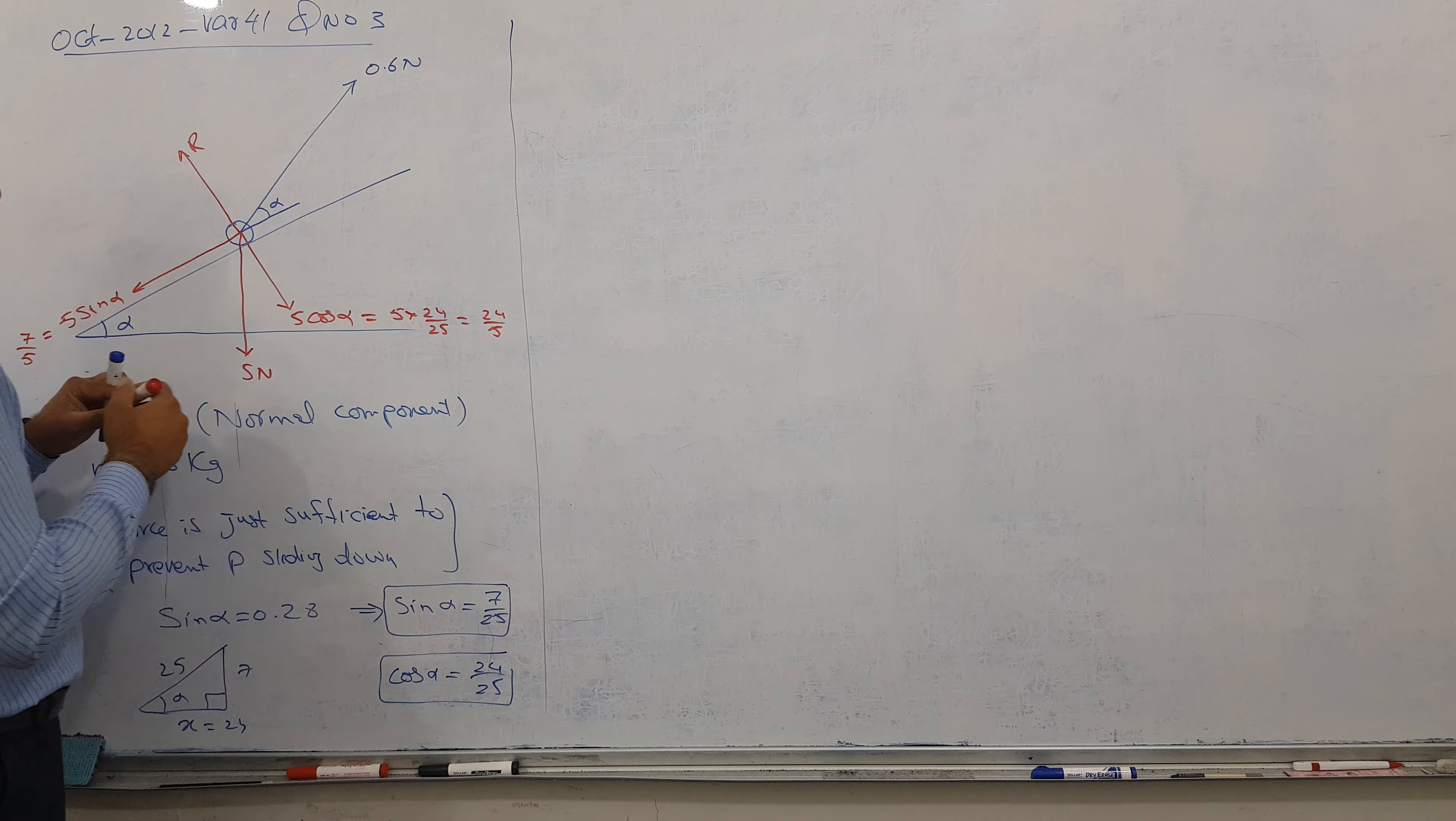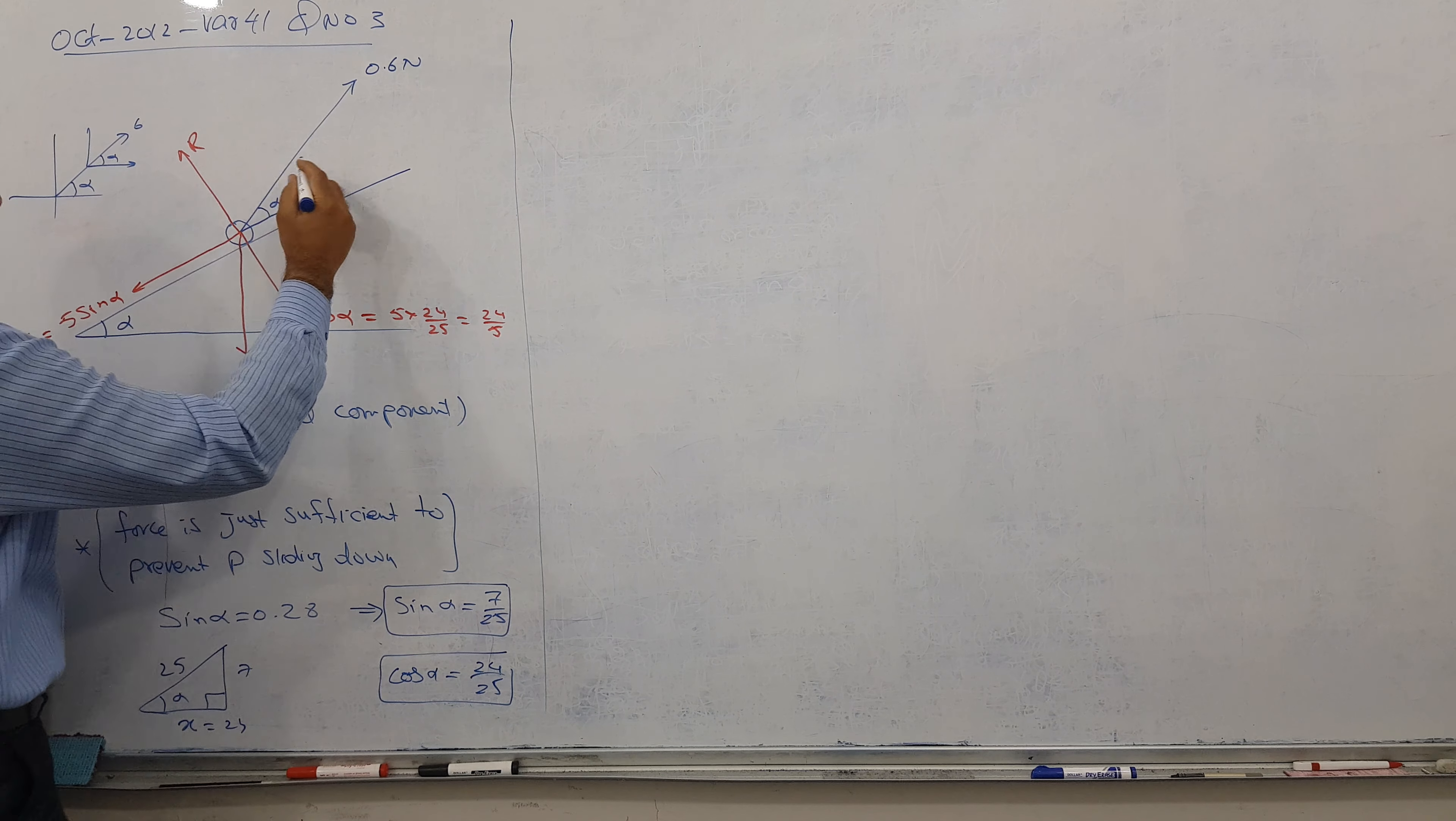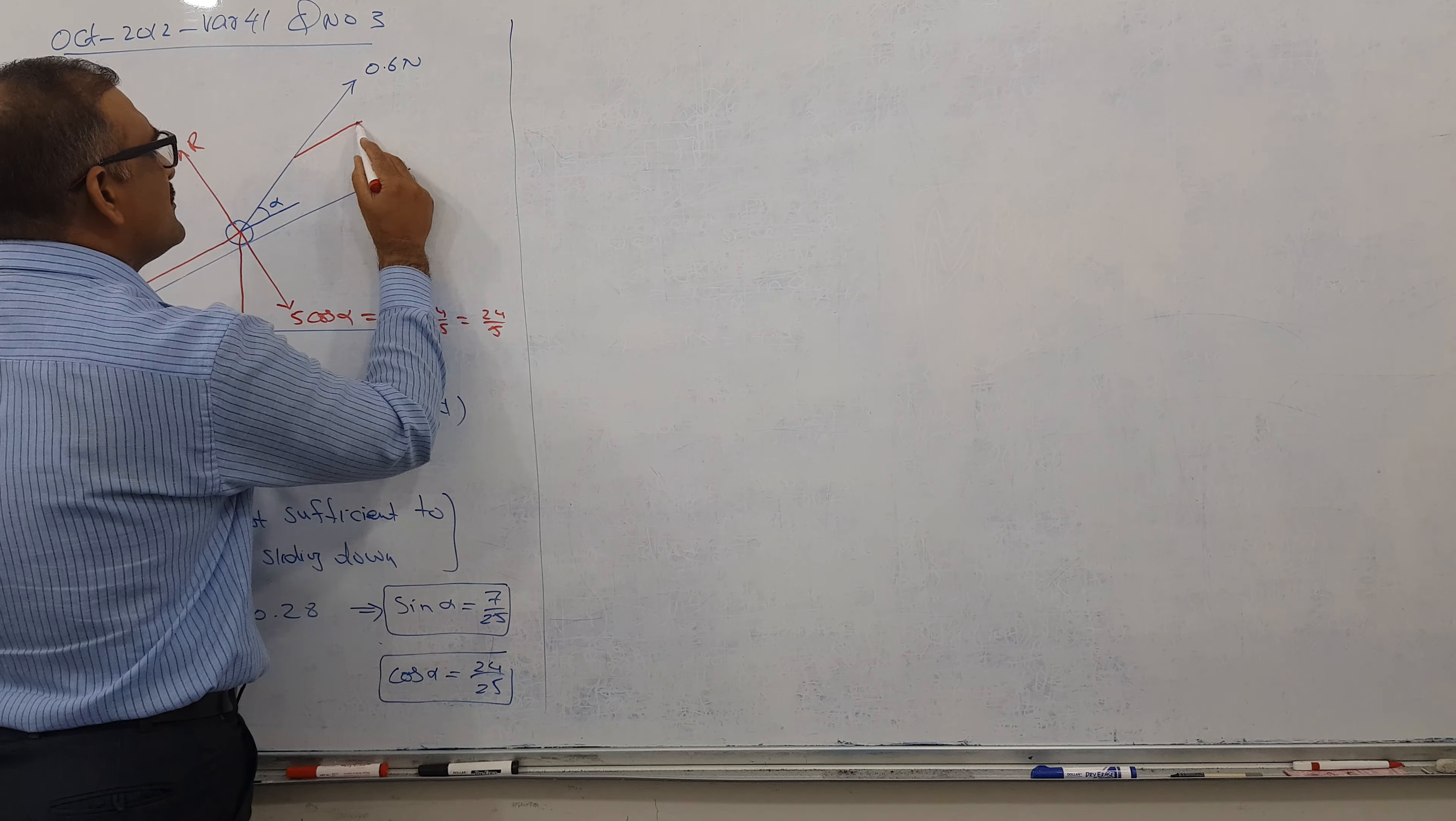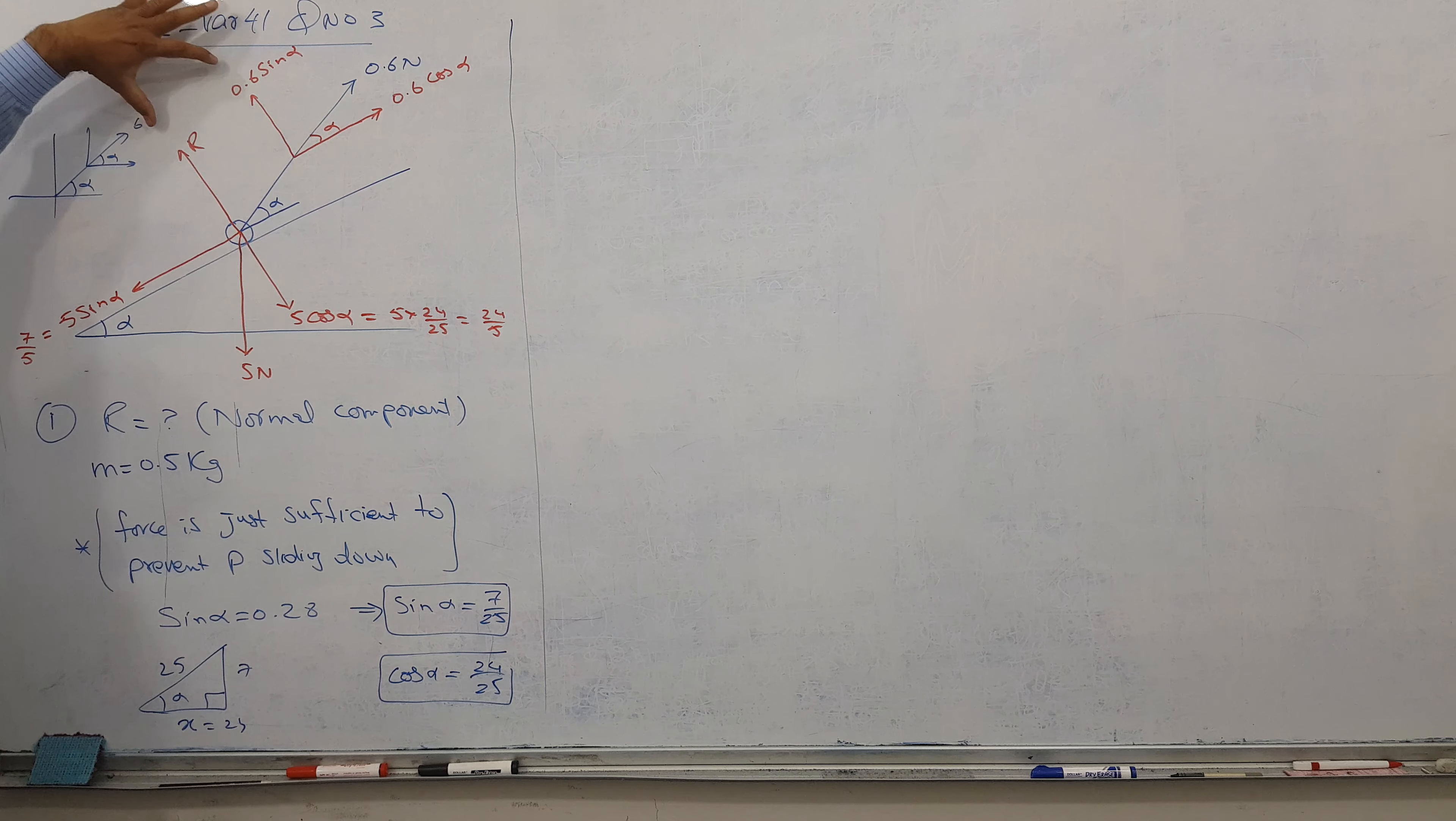So this is very clear. I have both components. Now I did not resolve the force. You are familiar whenever we resolve any force, for example we have this force of 0.6 and this is alpha. So this is cos alpha and this is sine alpha. Same story I'm applying. This rotates a bit, means I have 2 components, one parallel to plane and one perpendicular to plane. So you can see here this is parallel to plane and this is perpendicular to plane. This alpha, so this is 0.6 cos alpha and this 0.6 sin alpha.